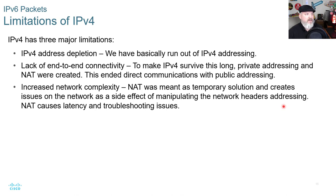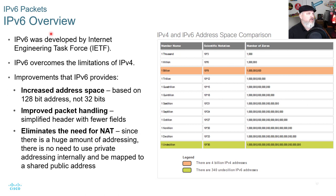V6 was developed by the Internet Engineering Task Force, or IETF, to overcome the limitations of V4. It provides increased address space based on a 128-bit address rather than 32-bit. It improved and simplified the header with fewer fields, and eliminated the need for NAT. Since there is a huge amount of addressing available, there is no need for private addressing internally mapped to a shared public address.